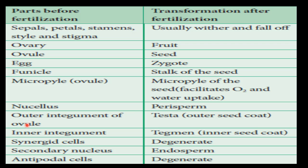The outer integument of the ovule becomes the testa — the outer seed coat. The inner integument of the ovule becomes the tegmen, or inner seed coat. The synergid cells degenerate. The secondary nucleus becomes the endosperm, which supplies nourishment to the developing embryo. The antipodal cells also degenerate. Thank you, students. We will meet again in the next discussion.